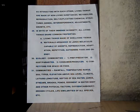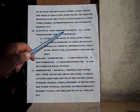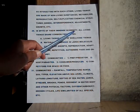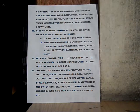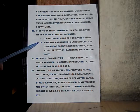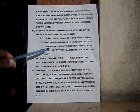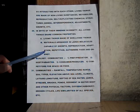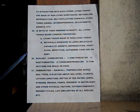Number twenty-nine: in spite of their immense diversity, all living things share common properties. A. Living things are made of non-living things — that means chemicals. B. Materials are arranged in large molecules capable of growth, reproduction, adaptation, repetition, gathering food and energy.